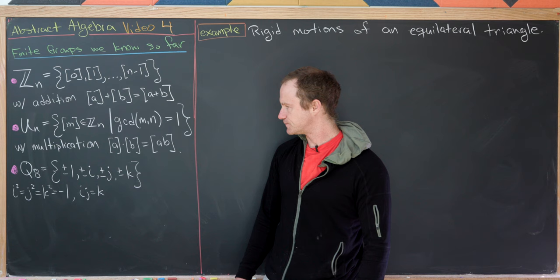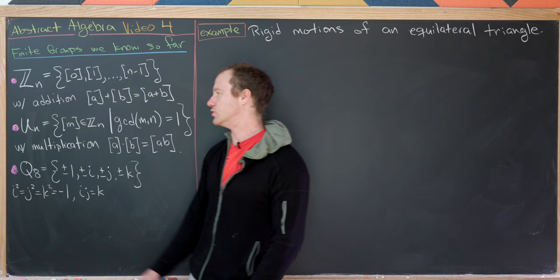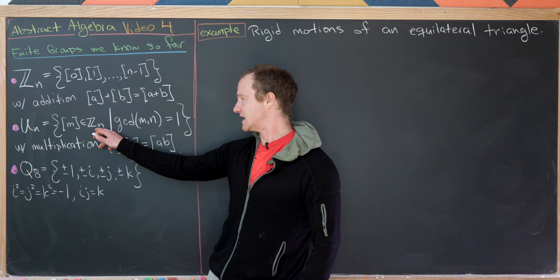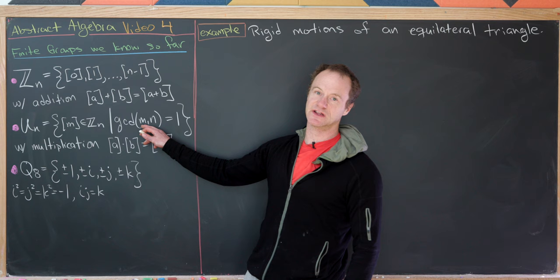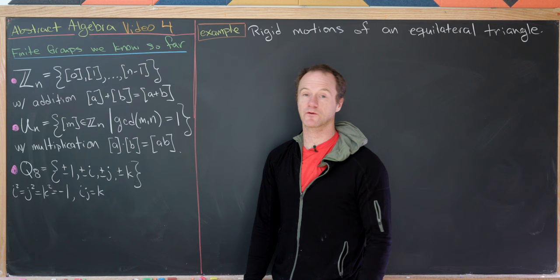The next group we looked at was the group of units modulo n, denoted Un. That consists of all equivalence classes inside Zn where the GCD of the representative m with n is 1 — in other words, everything relatively prime to n. The operation here is multiplication, and we went through why this makes a group last time.